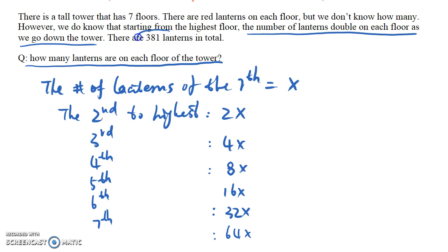Because we know that there are 381 lanterns in total, we can add these numbers up. x plus 2x plus 4x plus 8x plus 16x plus 32x plus 64x equals 127x if you plug all those numbers into a calculator. And this equals 381. So we can solve for x. It equals 3.